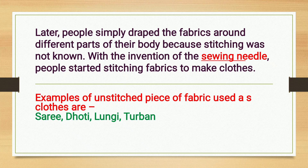Later, people simply draped fabrics around different parts of their body because stitching was not known. With the invention of the sewing needle, people started stitching fabrics to make clothes. Examples of unstitched pieces of fabric used as clothes are saree, dhoti, lungi, and turban.